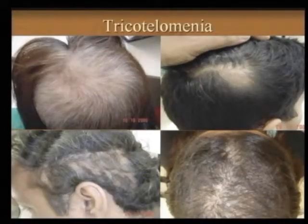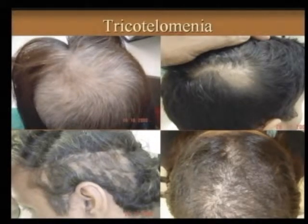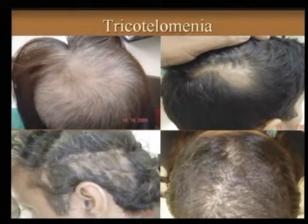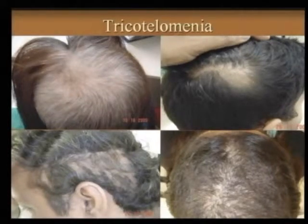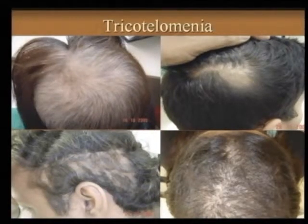In trichotillomania where a patient holds and plucks the hair out, the diagnosis is broken hair shafts seen within the area. Usually for a right-handed person it will be in the right temporal or right temporal-parietal region, which is easily reached by a wandering hand, and you have normal hair all around these areas. The lower left hand side picture shows trichotillomania on the left hand side of the patient — and this patient was, surprisingly, left-handed.